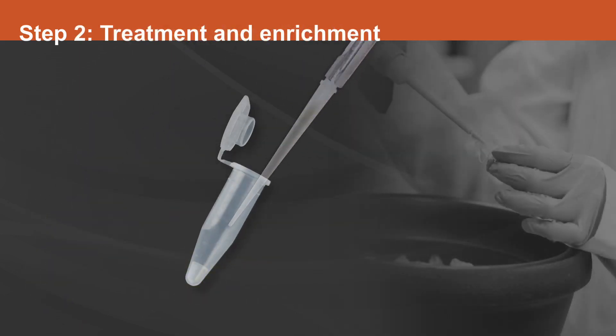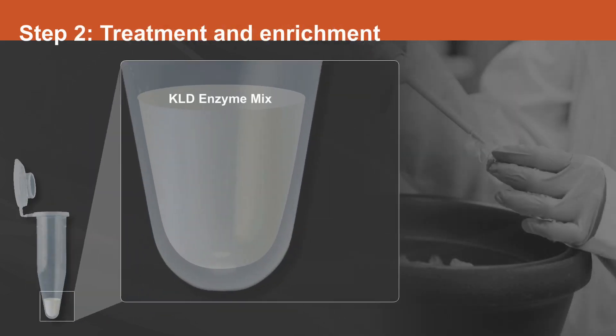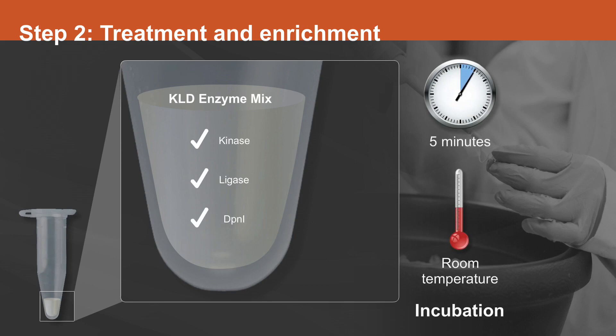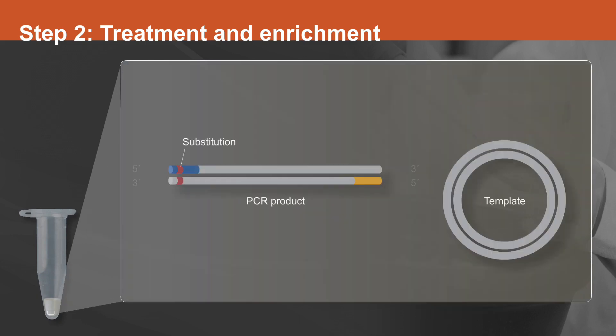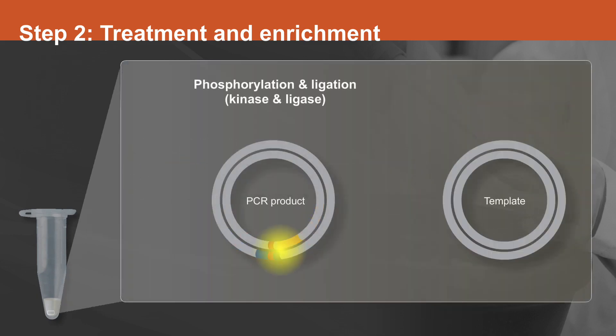Next, the PCR product is combined with a unique KLD mix comprised of a kinase, a ligase, and DPN1, and the mix is incubated for 5 minutes. During this time, rapid phosphorylation and ligation occur, thereby circularizing the PCR product and removing the template.